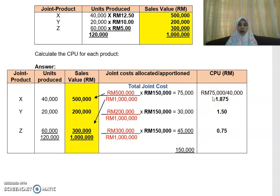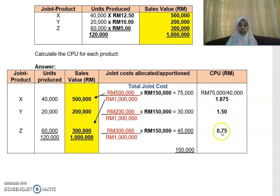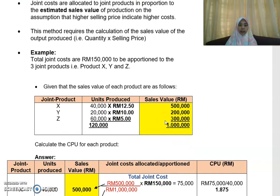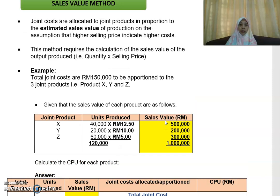To calculate the CPU under the sales value method: for X, RM75,000 divided by 40,000 units gives RM1.875. For Y, RM30,000 divided by 20,000 units gives RM1.50. For Z, RM45,000 divided by 60,000 units gives RM0.75. As a summary, for the sales value method you work out the sales value and take the ratio accordingly — unlike the physical measurement method where physical units form the basis for allocating total joint cost.